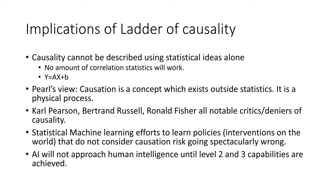The history of causality is interesting, and UCL doesn't have a very illustrious part to play — Carl Pearson, the first head of the eugenics department at UCL, denied categorically the existence of causality, and Ronald Fisher had problems with causality as well. If you believe Pearl, you would conclude that AI can't approach human-level intelligence unless level two and level three capabilities — interventions and counterfactuals — are achieved.